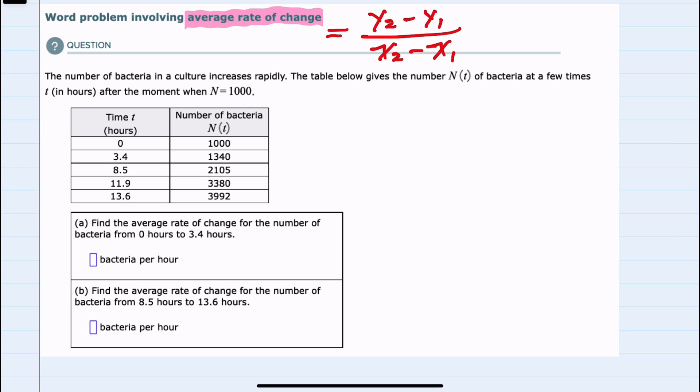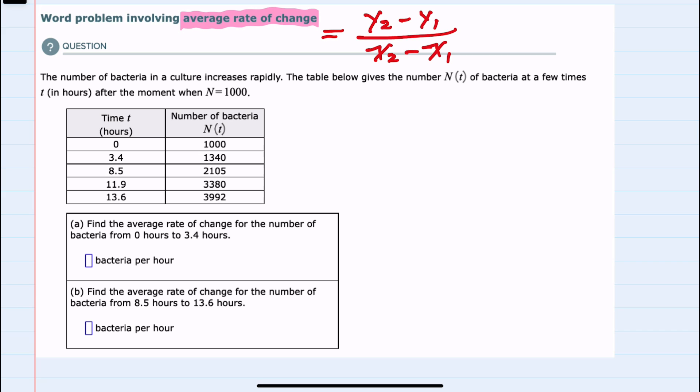In this example, we're given the number of bacteria in a culture. We have a table that has both time and the number of culture at that time. Looking at our table, we have x values and the corresponding y values.